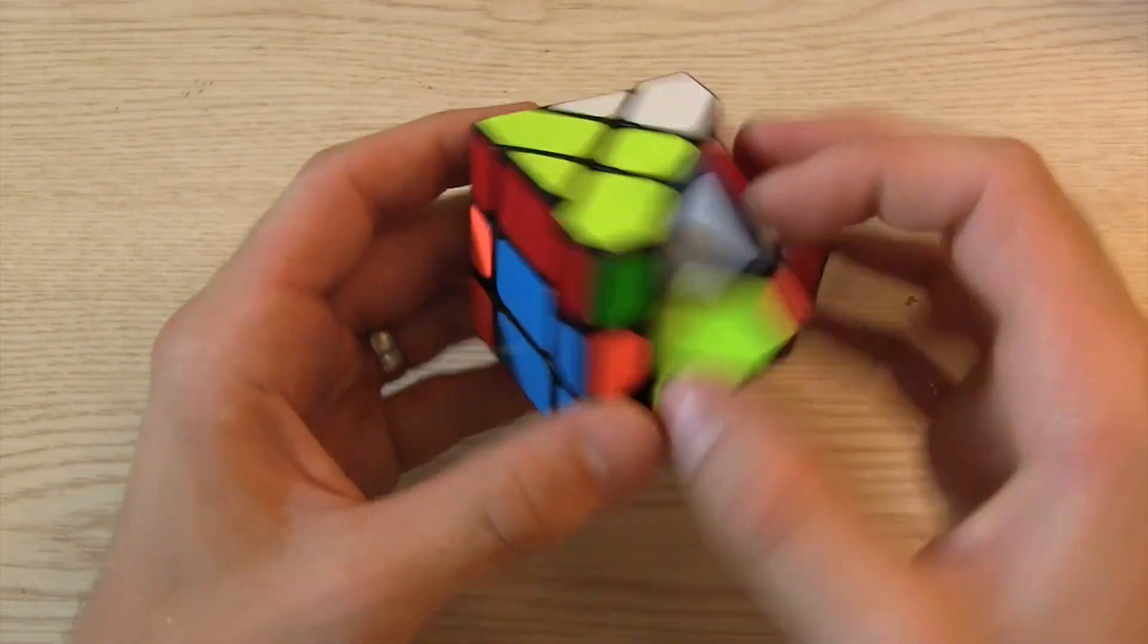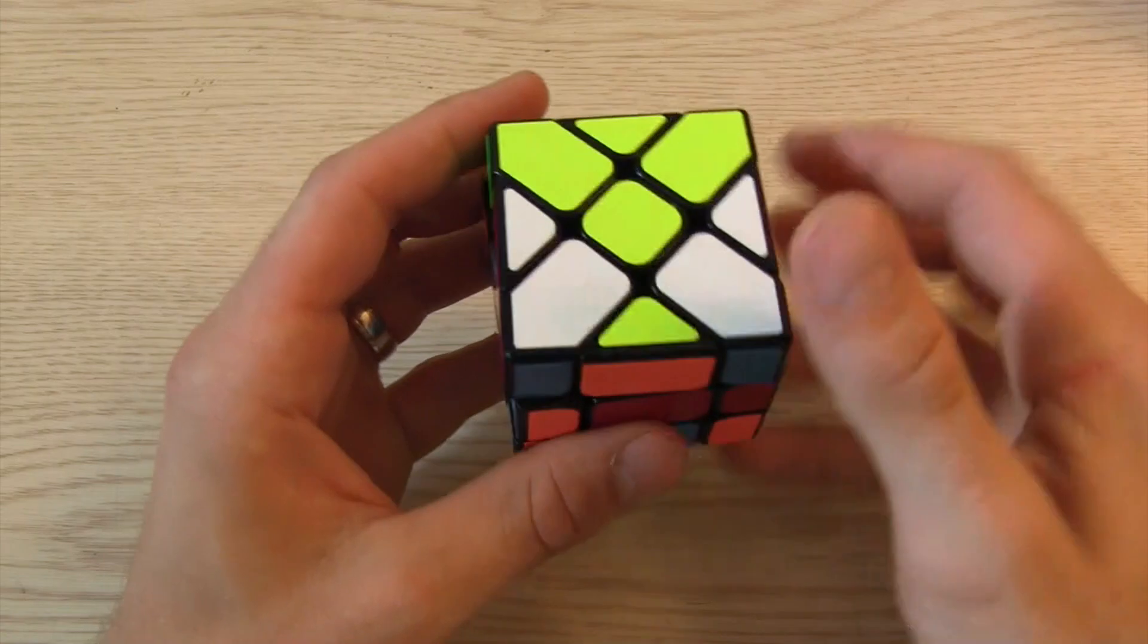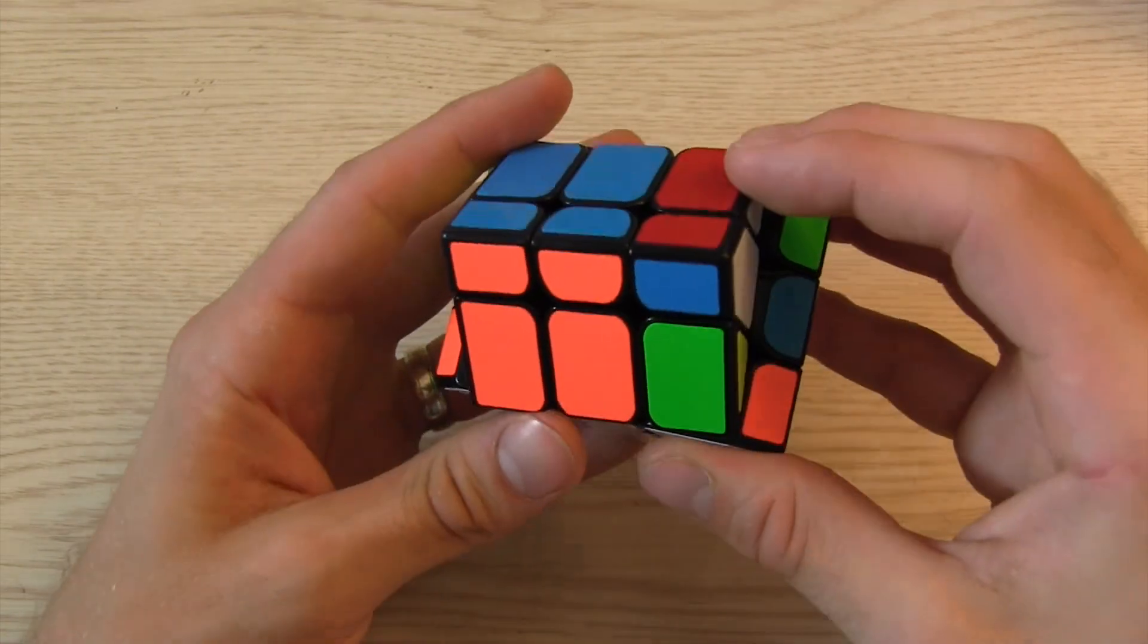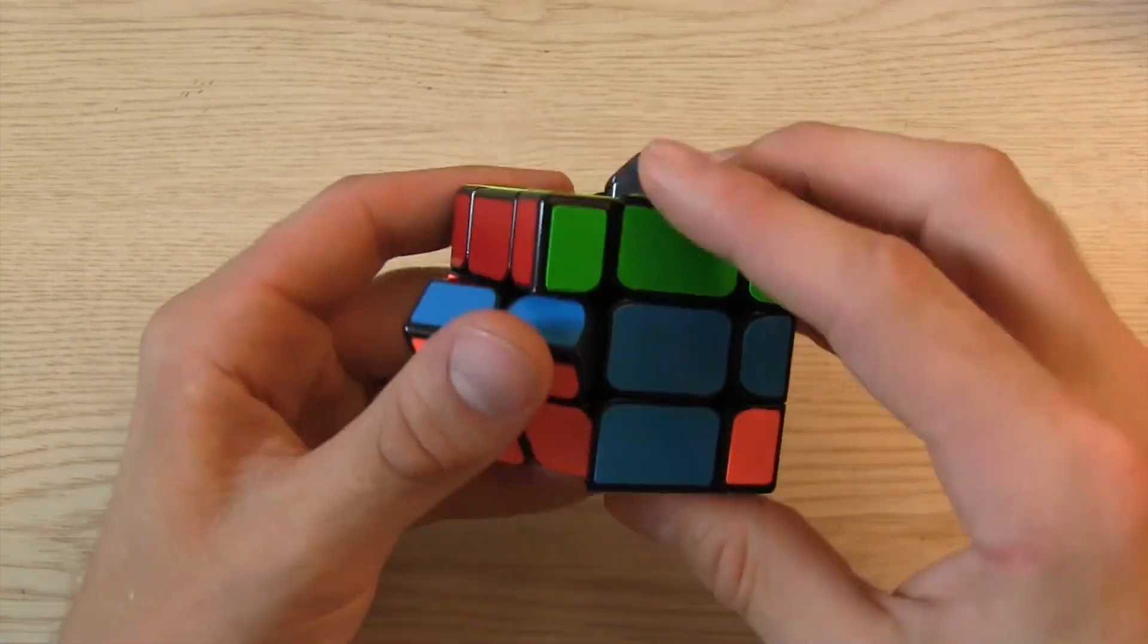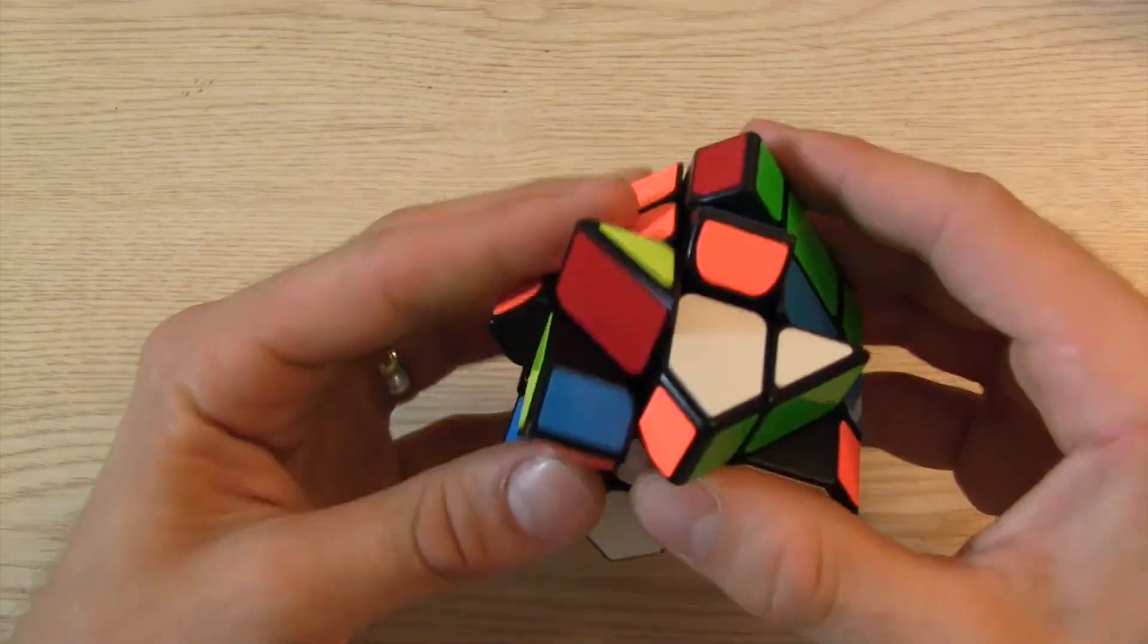So we could turn it this way and it doesn't really change form at all, but once you turn it 90 degrees then it really starts getting a little bit crazy.